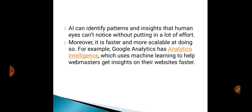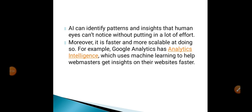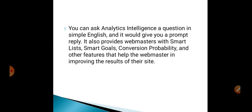AI can identify patterns and insights that human eyes cannot notice without a lot of effort. It is also faster and more scalable. For example, Google's Analytics Intelligence uses machine learning to help webmasters get insights on their websites faster. You can ask Analytics Intelligence a question in simple English and it gives you a prompt reply, and it also provides smart lists, smart goals, conversion probability, and other features.